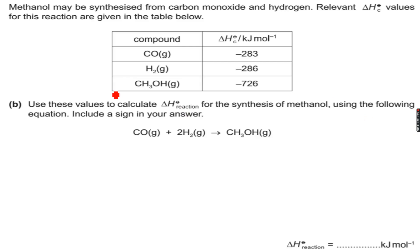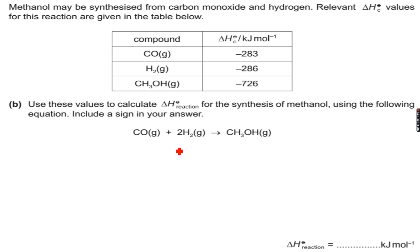Relevant delta H naught C values for this reaction are given in the table below. So this time they have not given us delta H naught F values, they have given us delta H naught C values. So we cannot take the elements over here or down below, but we'll have to take the combustion products of these compounds down below. So carbon monoxide combusts to form carbon dioxide.